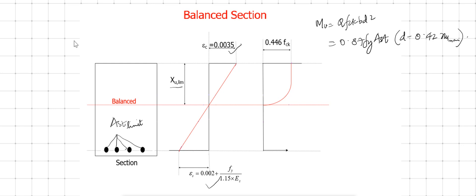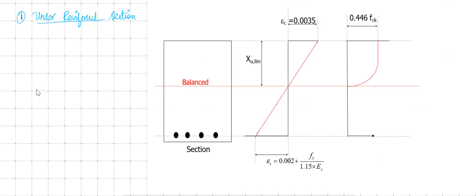Now we will see what is meant by an under-reinforced and over-reinforced section. Consider a balanced section where the neutral axis depth is x_u limit. Now I am going to reduce the number of bars — that is, reduce the area of steel.